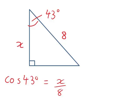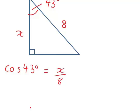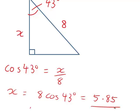From there, to make x the subject, we should multiply both sides by 8, giving us x is equal to 8 times cos 43 degrees, which in this case works out to be 5.85 correct to two decimal places.